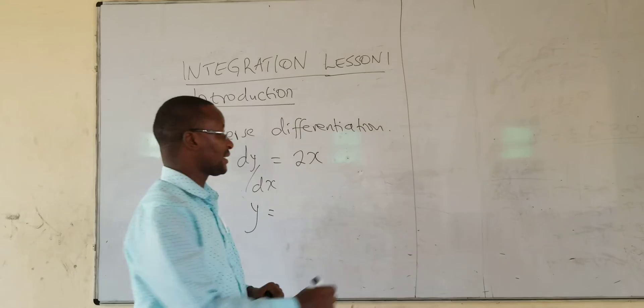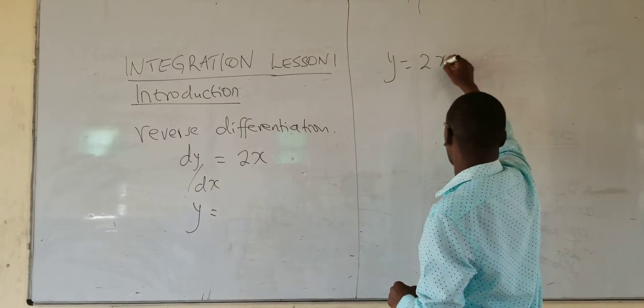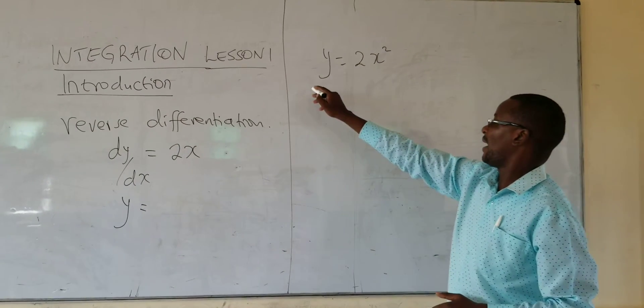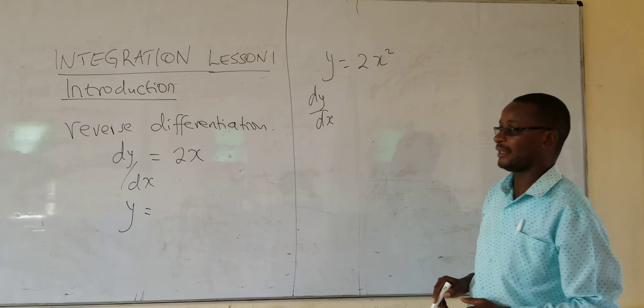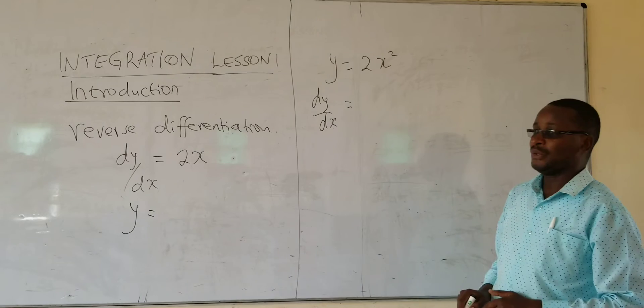I want us to recap a bit. If you are given y is equal to 2x squared, for example, and you are asked to get the equation for the tangent or for the gradient, you differentiate.